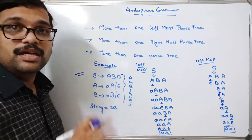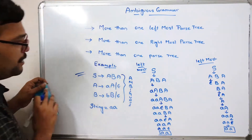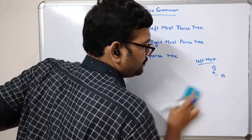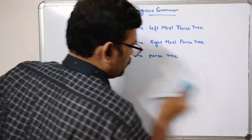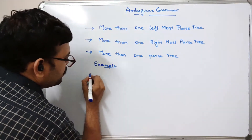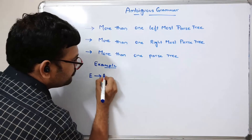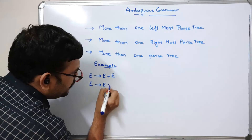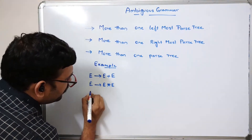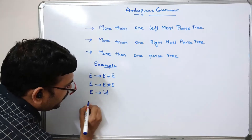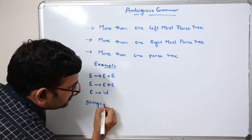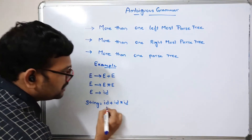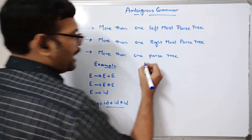Let us take one more example. Consider: E → E + E, E → E * E, and E → id. The string to derive is: id + id + id * id. We will now use rightmost derivation.